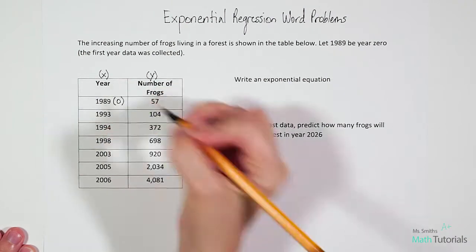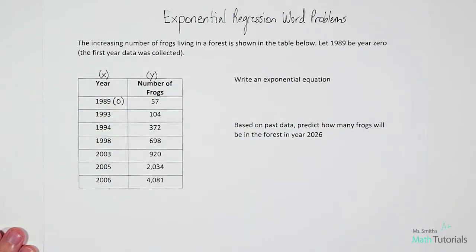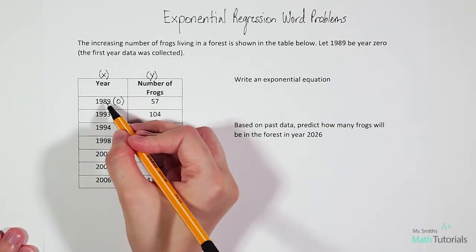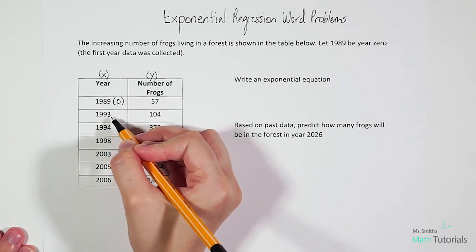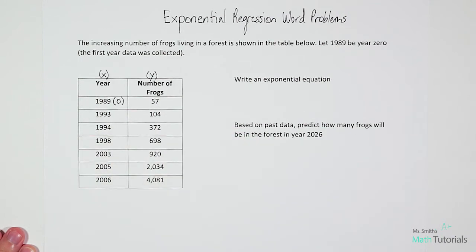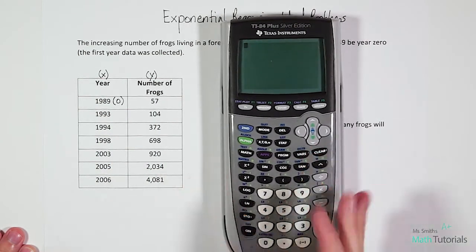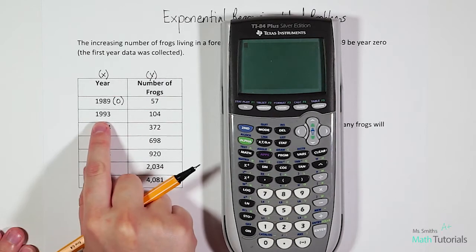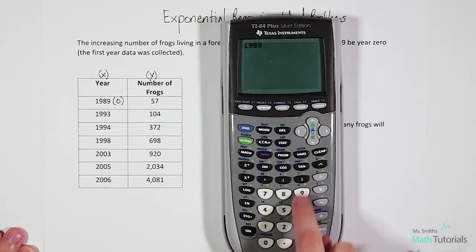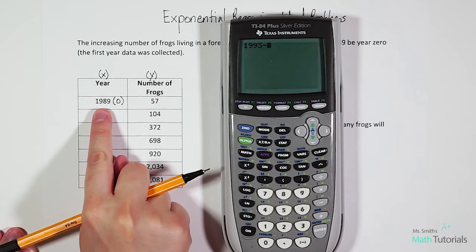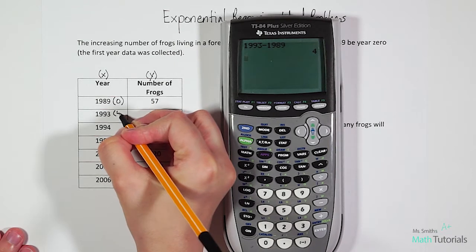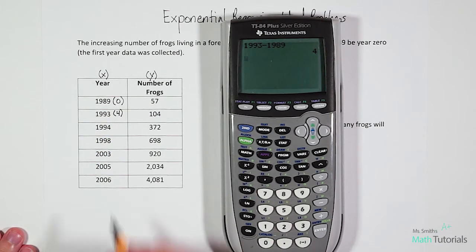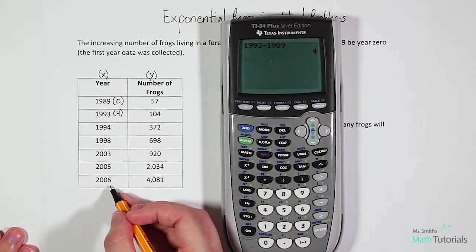We're not going to put 1989 in the calculator, we're going to put zero. So then we have to think, if 1989 is year zero, what would 1993 be? There's an easy way to figure that out. We can always just find the difference between the two years. We can take our larger year, 1993, and subtract our smaller year, 1989, and that will give us four. So that tells us that four years have passed.